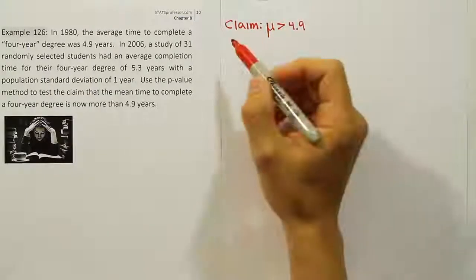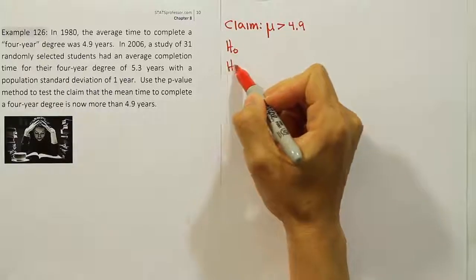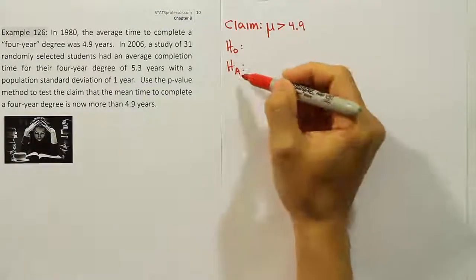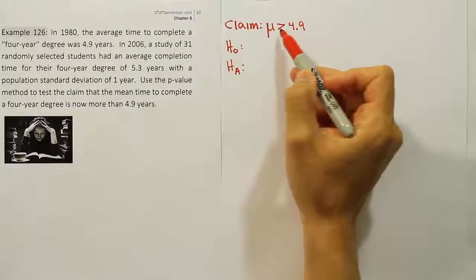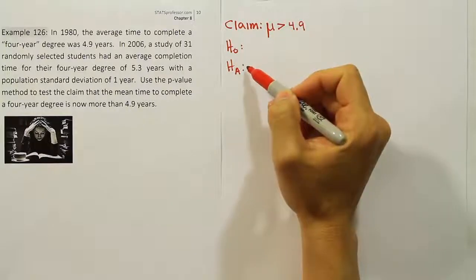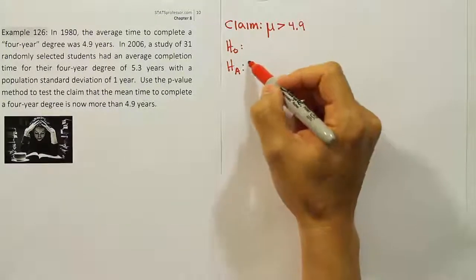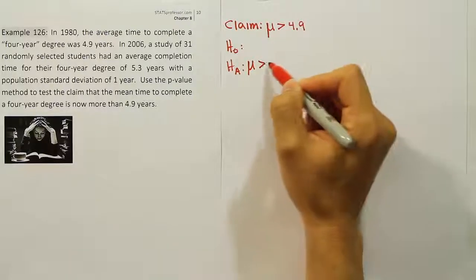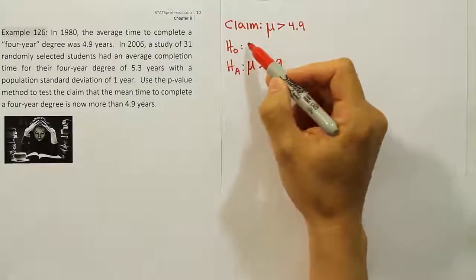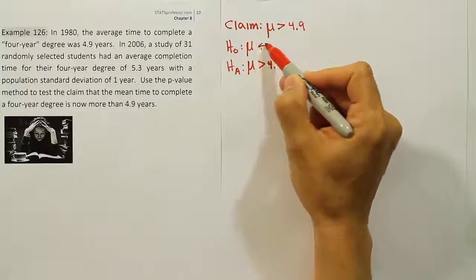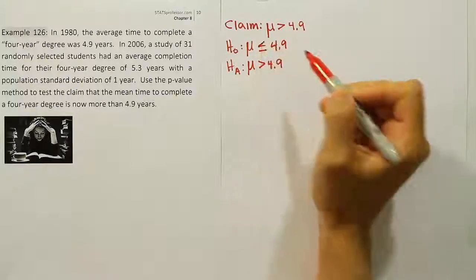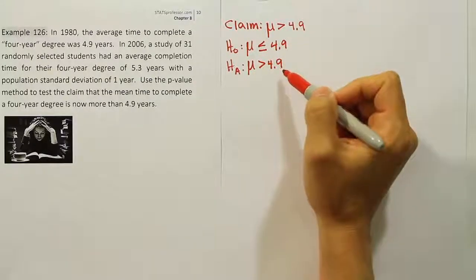Our next step is to get H0 and HA. The null hypothesis and alternative hypothesis are obtained from the claim. We look at the claim and ask what symbol we're dealing with. Since it's a greater than symbol, HA and the claim will be the same, because a greater than symbol is something that HA uses. The null hypothesis is the opposite or complement, so it will be less than or equal to 4.9. So we now have the claim, the H0 and the HA.